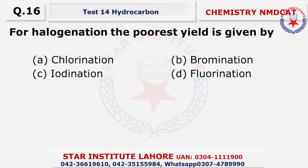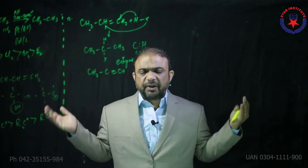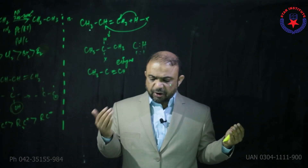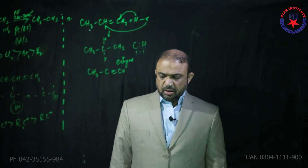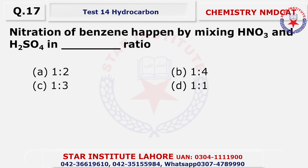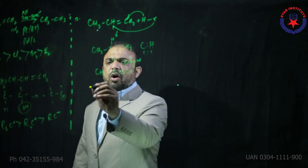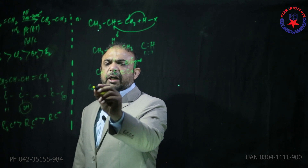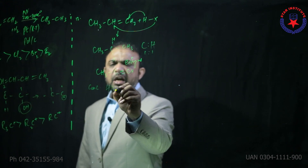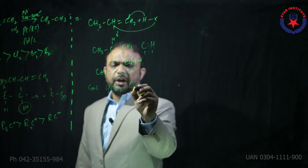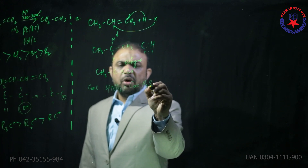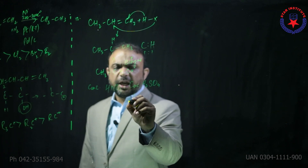Question 16: for halogenation, the poorest yield — the slowest and most difficult reaction is iodine, because fluorine gives a very vigorous reaction. So the choice should be iodine due to its bigger size. Question 17: nitration of benzene is done by mixing nitric acid and sulfuric acid.